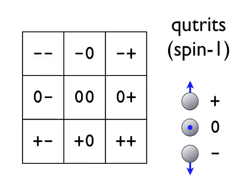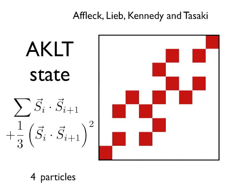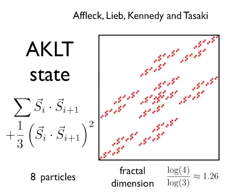The mapping can be generalized to states of higher dimensionality, for example, 3. Here, we present the ground state of the AKLT Hamiltonian with its fractal structure. Its fractal dimension is actually 1.26.